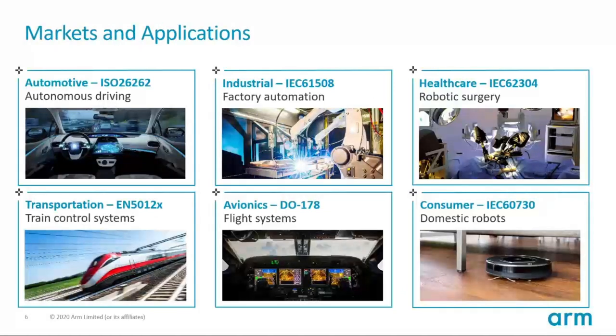Functional safety is required across multiple market verticals. Some are very established such as industrial, transportation and avionics. Others are more nascent such as consumer and medical. Automotive is of course a key vertical for ARM, but we look to scale across adjacent markets with our safety solutions. While the V-Model is generic and should be applied to all development projects, the safety standards mandate for it. Each industry has its own safety standard; however, their requirements are very similar.